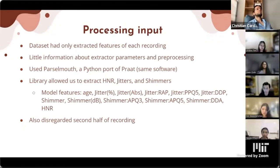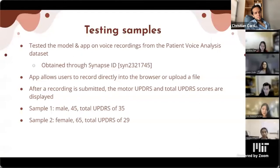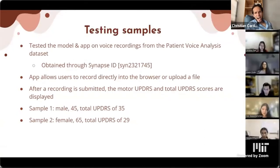Osteosarcoma metastasizes incredibly quickly, posing issues for treatment and recovery. It's crucial to diagnose it early so it can be caught and treated — there's a much higher treatment success rate when diagnosed earlier. If it metastasizes to the lungs or spreads to the brain, it becomes very difficult to treat.